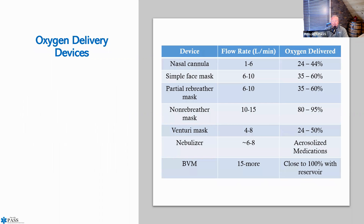Oxygen delivery devices: nasal cannula flow rate is one to six liters per minute, giving about 24 to 44% oxygen. For every one liter increase, we are increasing oxygen by about 4%. Normal atmospheric pressure is 21%, so one liter puts a patient at about 24 to 25%. At six liters, six times four is 24, plus the 21% already being breathed, putting the patient at about 44 to 45%.